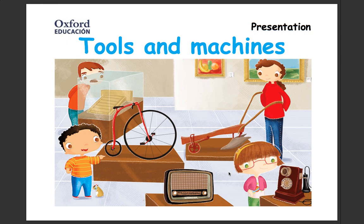Hi second grade, this is Emily, and today for natural science we're going to be talking about tools and machines. Take a look at this picture and see which tools and machines you can see. Over here it looks like we have some type of ramp, a very old-fashioned bicycle, an old-fashioned plow, an old telephone, and a radio. Let's learn more about tools and machines.